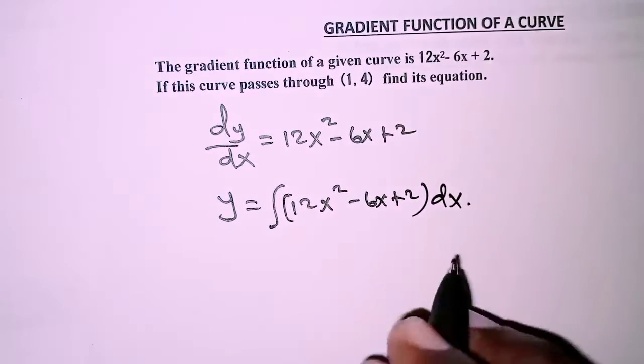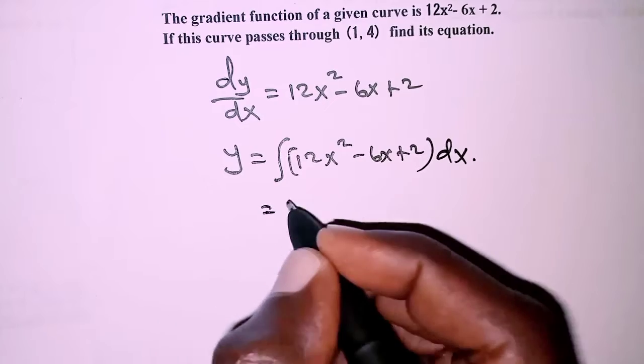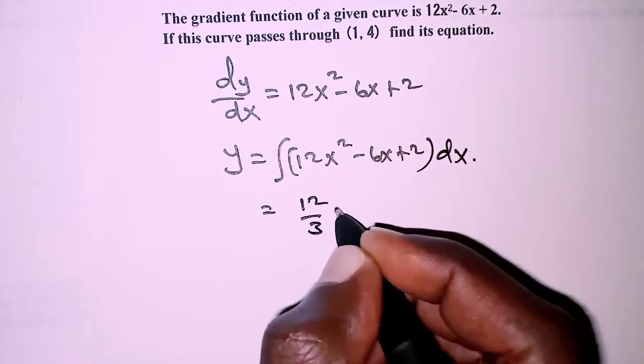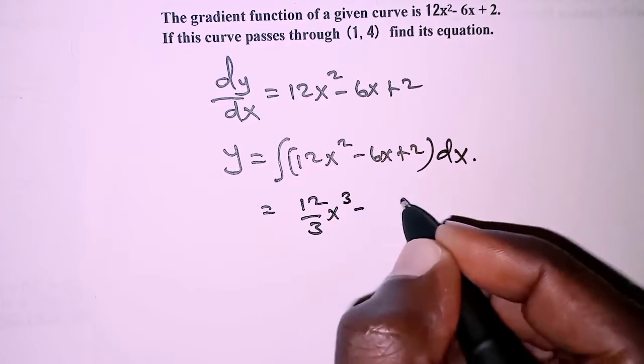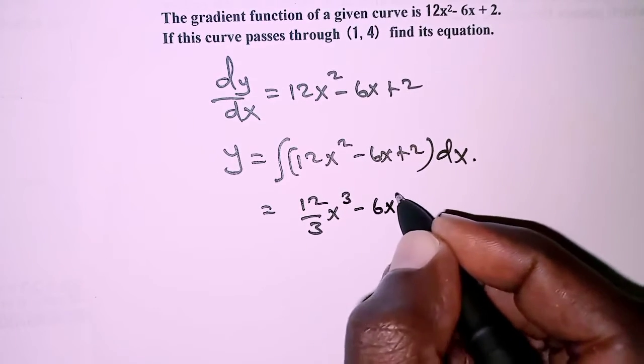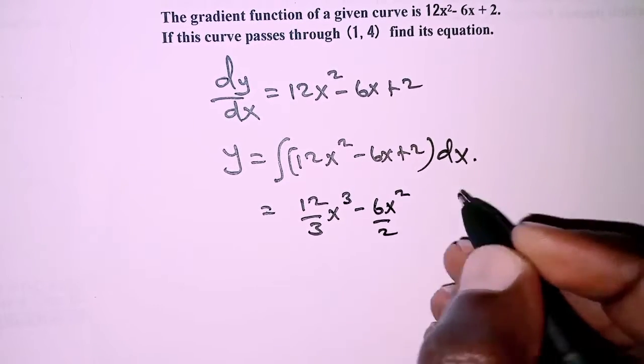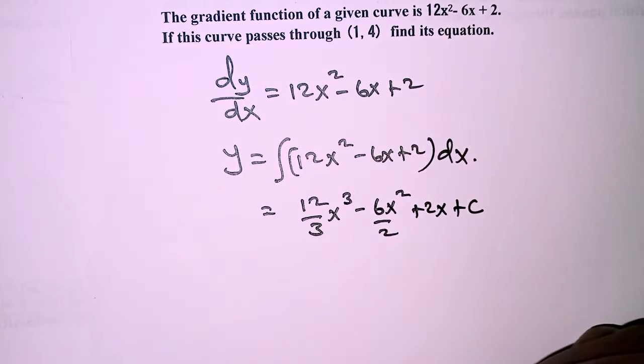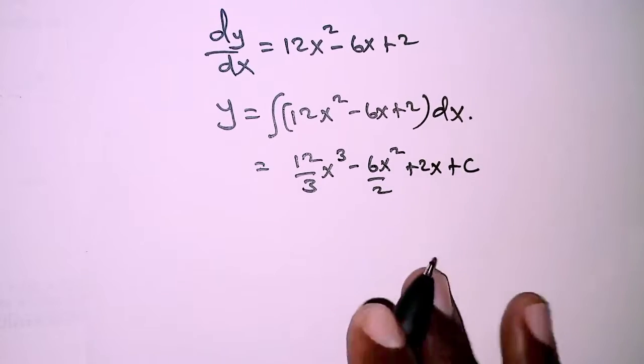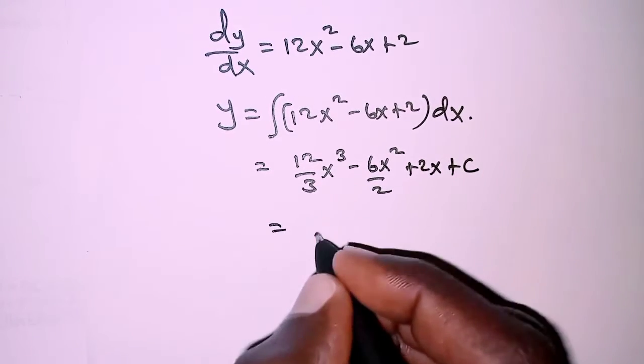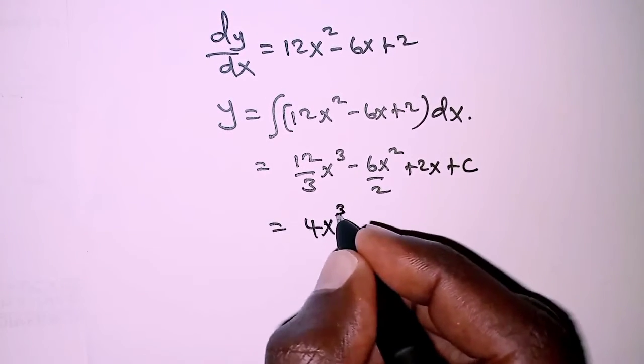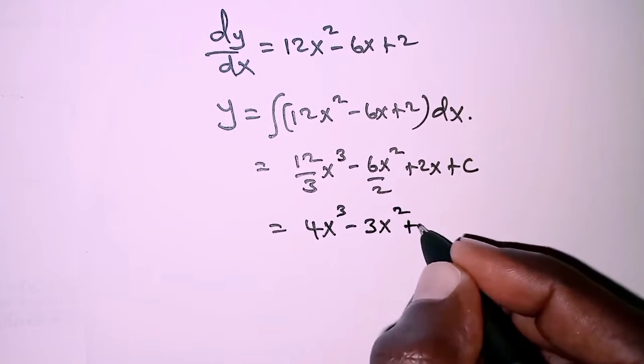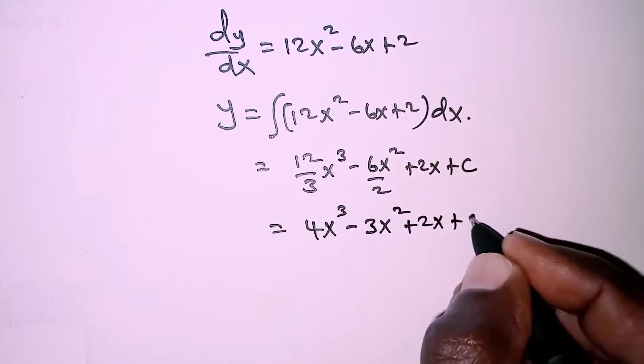This is going to be 12/3 x³ - 6x²/2 + 2x + C. So this is going to be 4x³ - 3x² + 2x + C.